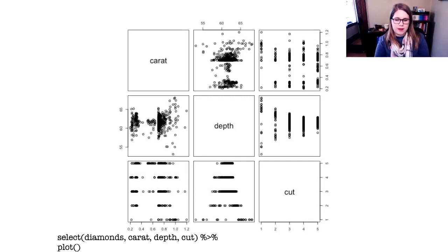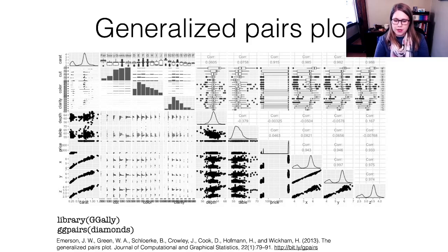This is a generalization of the pairs plots that works for more than just quantitative variables. The ggpairs, which is the generalized pairs plot, lets you see scatter plots if there's two quantitative variables, side by side box plots if you've got a quantitative and a categorical. It lets you see kind of mosaic plots if you have two categorical variables. And then along the diagonal, you get to see the distribution of the one variable. So a lot of information gets packed into a generalized pairs plot.